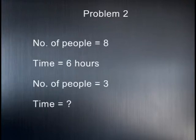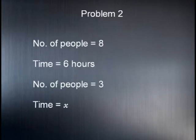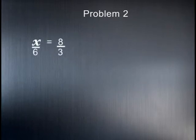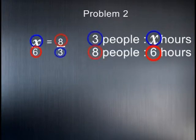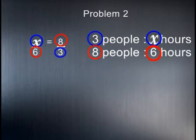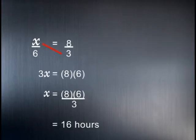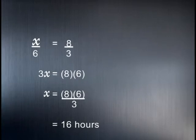To solve the second problem, we make the time x. We have x divided by 6 equal to 8 divided by 3 — notice we inverted 8 divided by 3 because we are calculating indirect proportion. Cross multiplying gives 3x equals 8 multiplied by 6, giving an answer of 16 hours. Let's hope Sam could solve the problems easily.